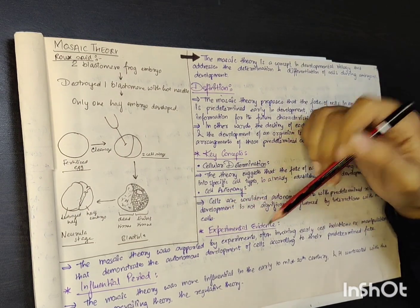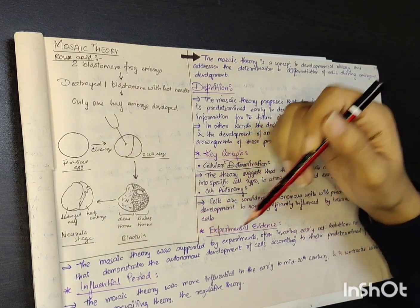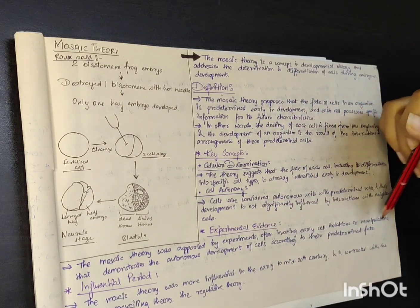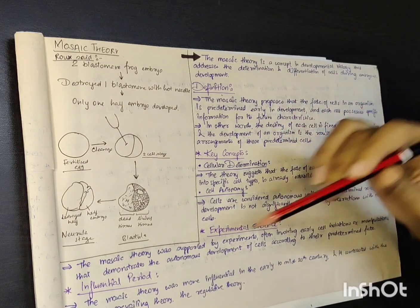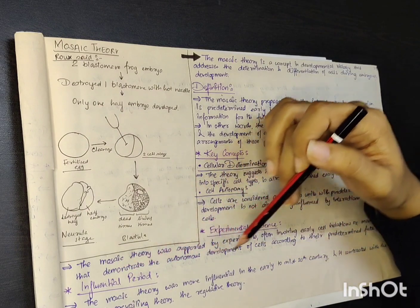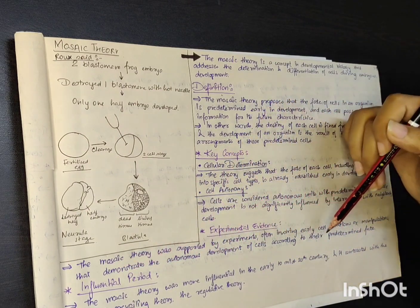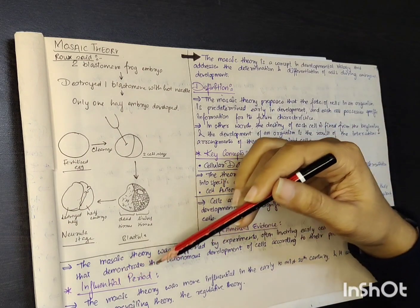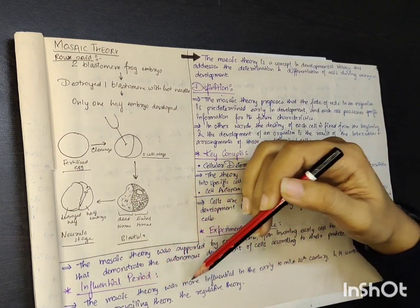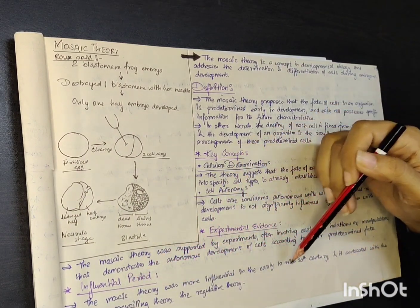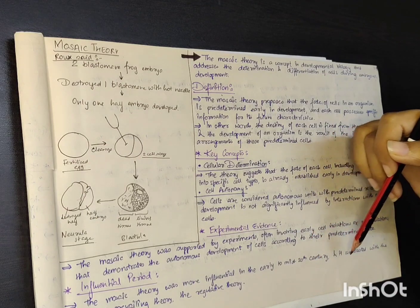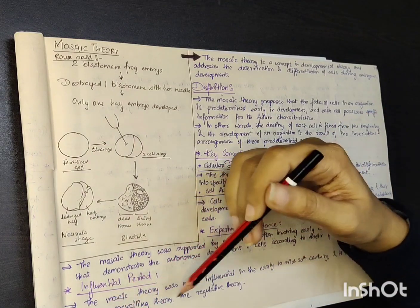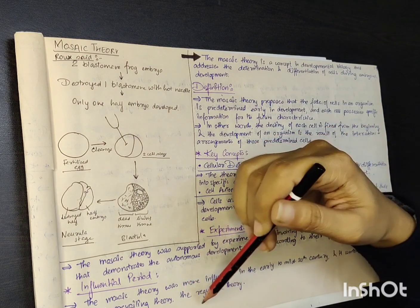Experimental evidence: The mosaic theory was supported by experiments that often involved early cell isolations or manipulations, demonstrating the autonomous development of cells according to their predetermined fate. The mosaic theory was more influential in the early to mid 20th century, and it contrasted with another prevailing theory — the regulative theory.